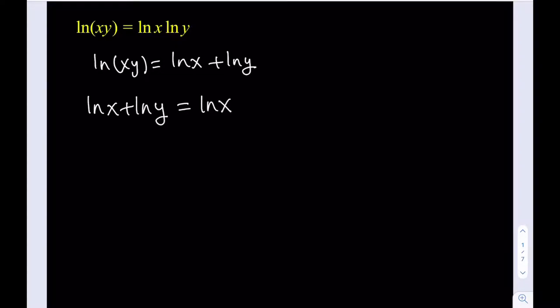So we get ln x plus ln y is equal to ln x times ln y. At this point I'm going to use some substitution here. So let ln x equal a and ln y equal b. And now let's go ahead and substitute those. We get a plus b is equal to ab.